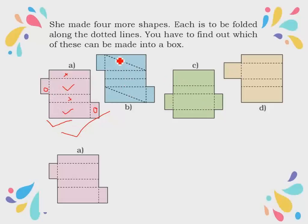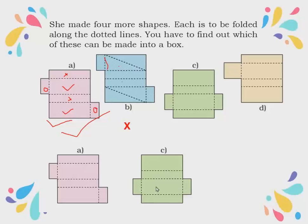Coming to the next one — here there is a triangle and opposite to it is a rectangle, so it will not close properly. This cannot be made into a box. Coming to shape C — yes, that can be made because the shape exactly opposite will cover each side. So that can be made. For the next one, it cannot be made into the shape because for one flap there is no closing flap on the other side, so it will be open on one side and cannot be made into a box.